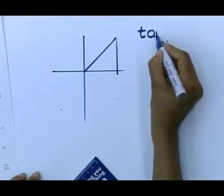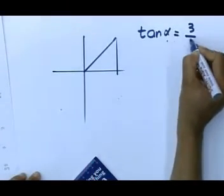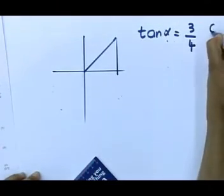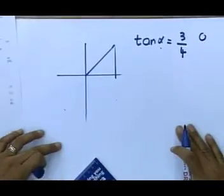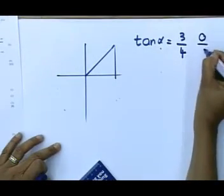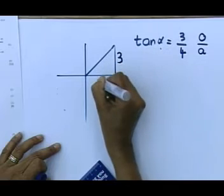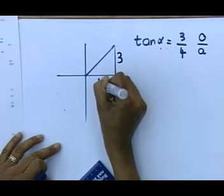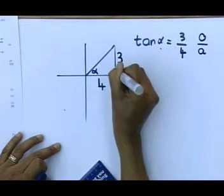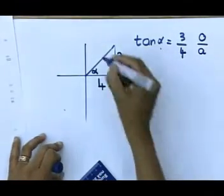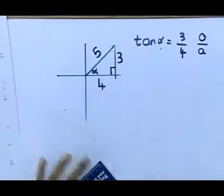The tan of alpha is three quarters. Tan is the opposite over the adjacent side, opposite over the adjacent side. Three is my opposite, four is my adjacent. Remember this is alpha, this is 90. Pythagoras will make that five.